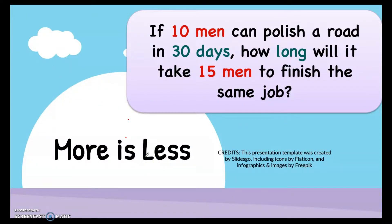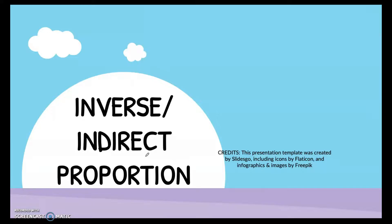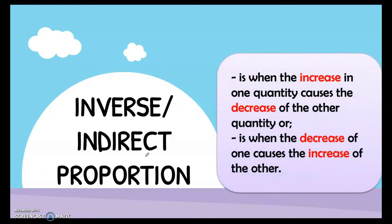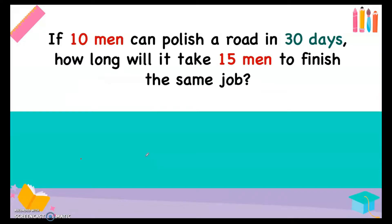Good day everyone. Let's start our topic with a story problem: 'More is Less.' If 10 men can polish a road in 30 days, how long will it take 15 men to finish the same job? This problem is an example of inverse or indirect proportion. Inverse or indirect proportion is when the increase in one quantity causes the decrease of the other quantity. Let's analyze the problem again: if there are 10 men...